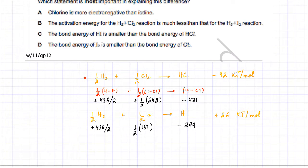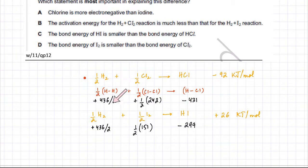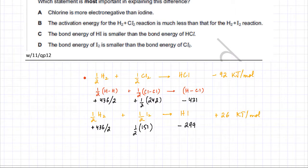Now we need to explain the overall difference in enthalpy. The overall enthalpy change is the sum of bond-breaking and bond-forming energy terms. In both reactions, the HH bond is being broken — the same amount in each case — so that is not a factor in explaining the difference between the two reactions.